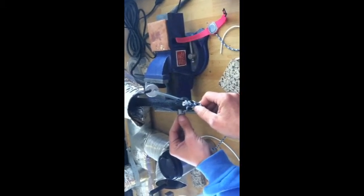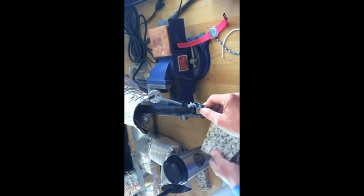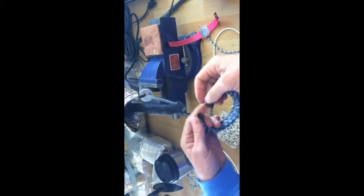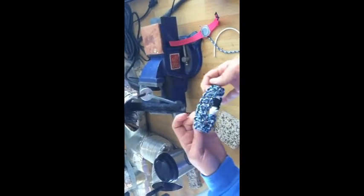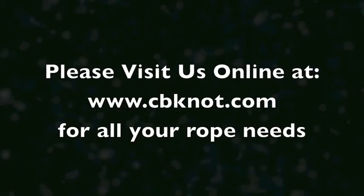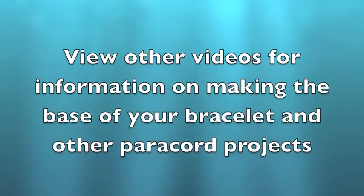Then on the other side I'm going to take it, heat it up, melt it down, and again roll it on the piece of marble so you have a good look. Then when you're done, you can snap it together and there you have your paracord bracelet. Thank you.